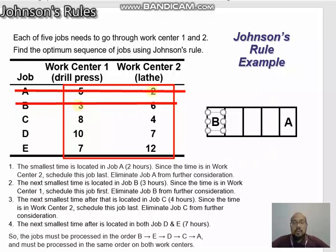Moving to the next step, we find the smallest time again. Now the smallest time is four hours for job C, located at work center two. Since these four hours are located at work center two, we schedule job C last.